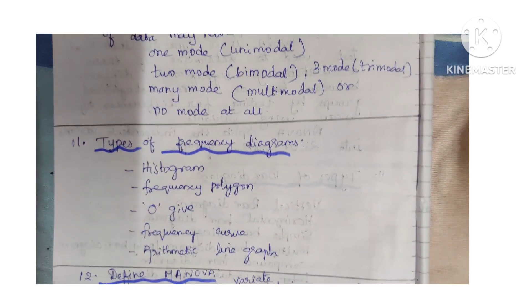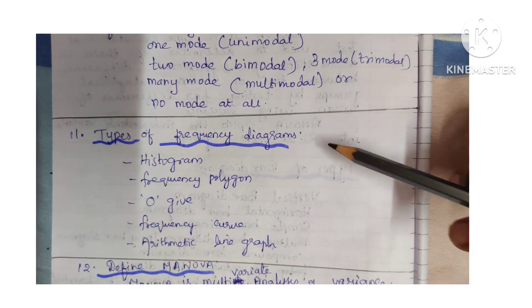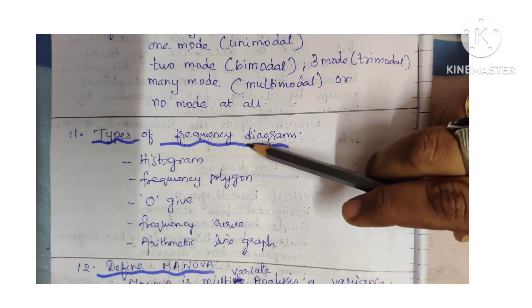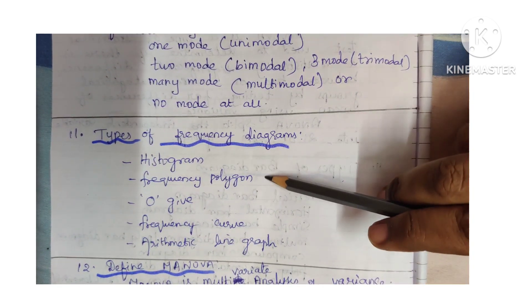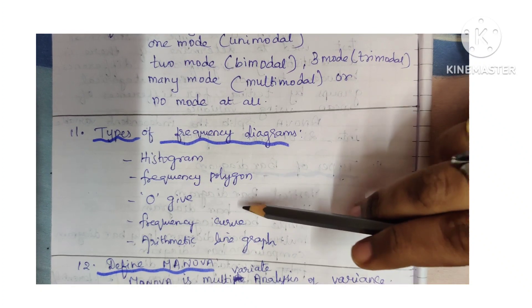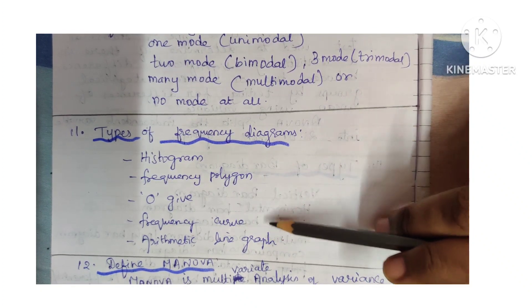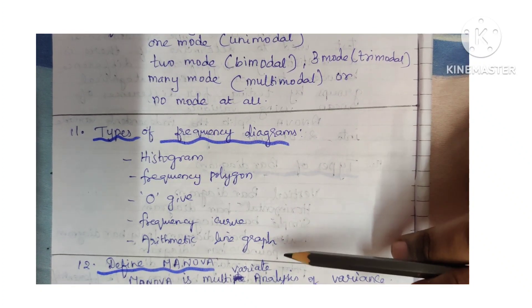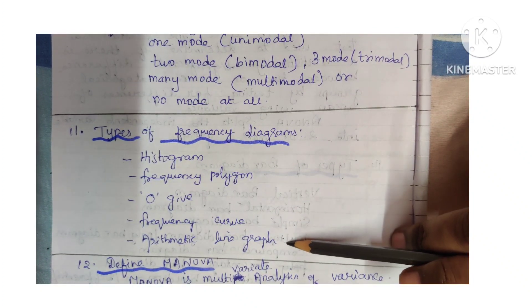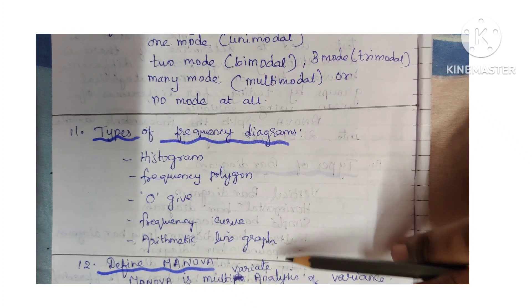Types of frequency diagram: histogram, frequency polygon, ogive, frequency curve, and arithmetic line graph.